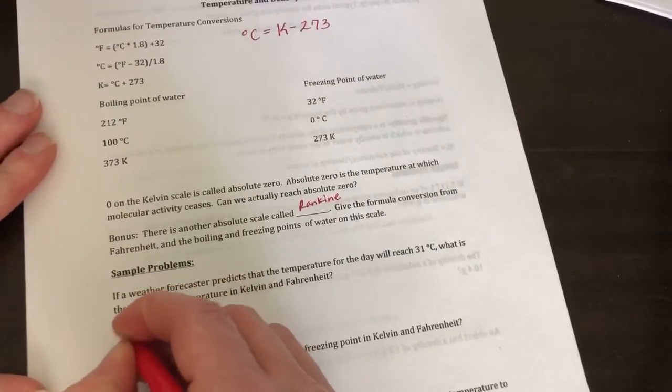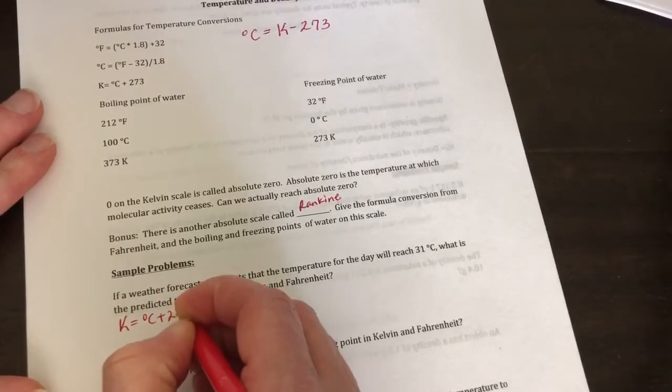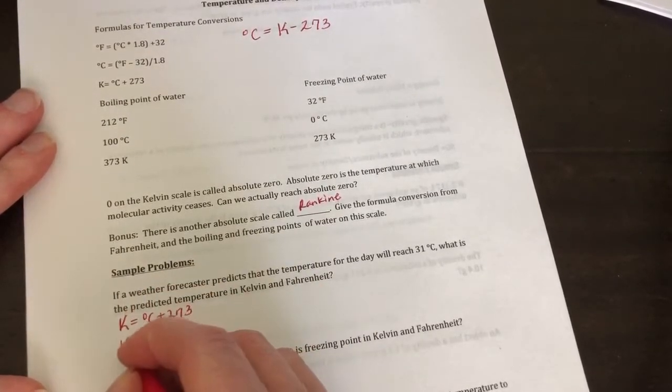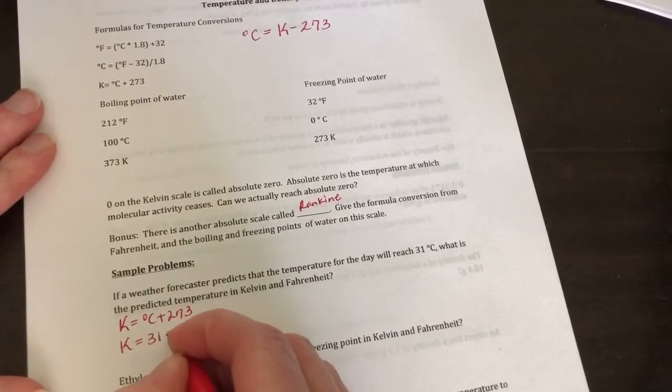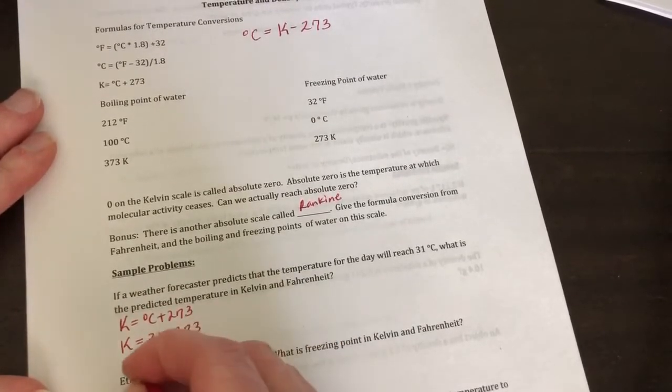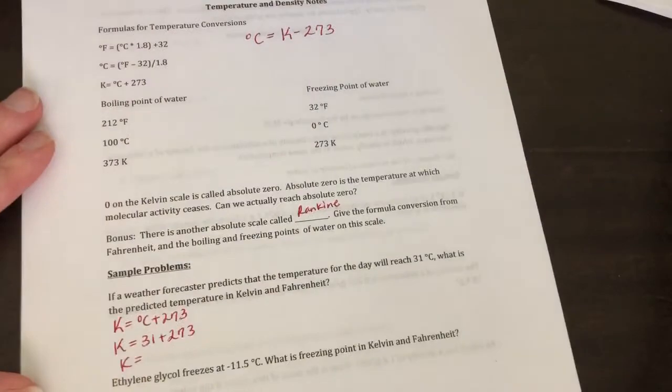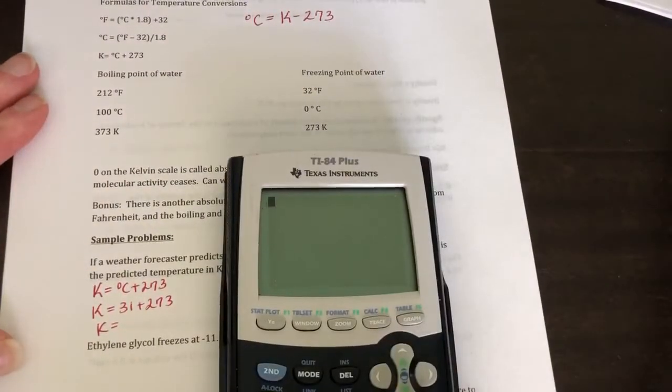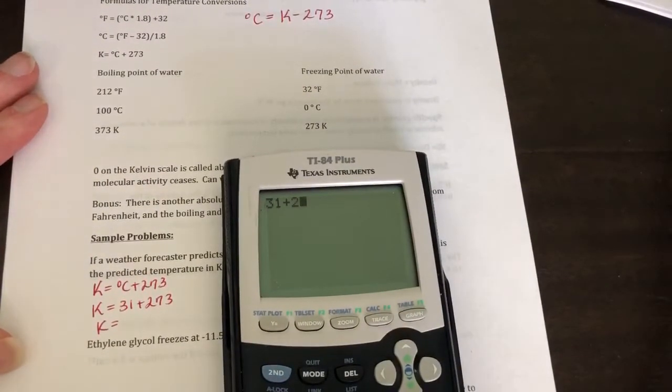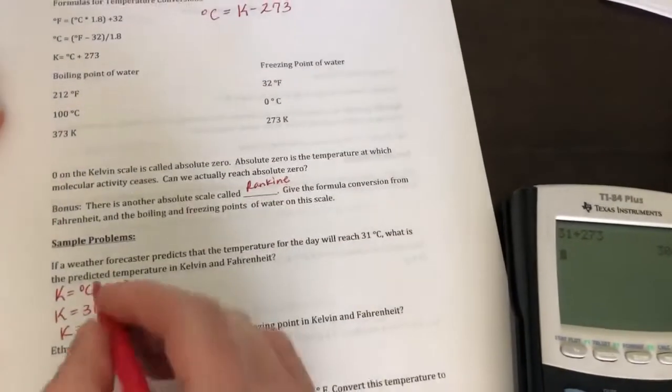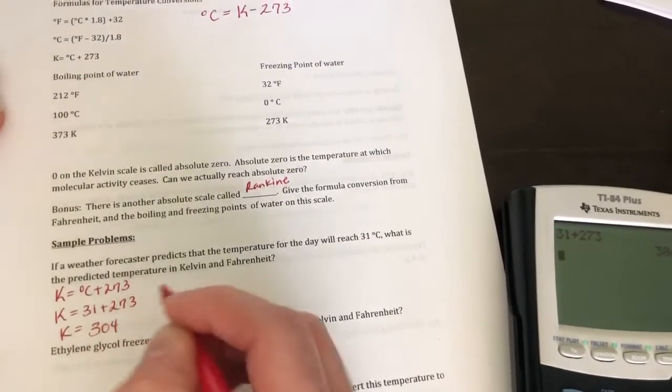So Kelvin is equal to degrees Celsius plus 273. So Kelvin is equal to 31 plus 273. And I'm going to put it in my calculator. So 31 plus 273 is 304 degrees Kelvin, or Kelvin, not degrees.